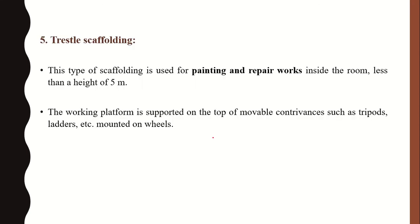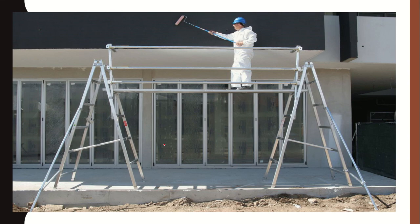Trestle scaffolding is mainly used for painting and repairing work inside a room, for heights not more than five meters. The platform is supported on mobile contrivances such as tripods or ladders, and can sometimes be mounted on wheels for easy movement inside a building.